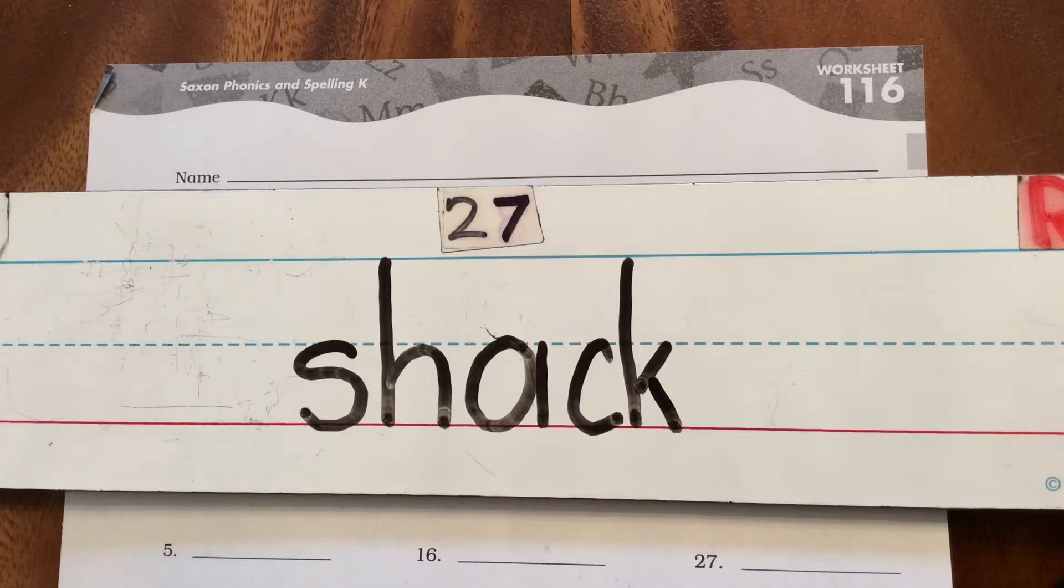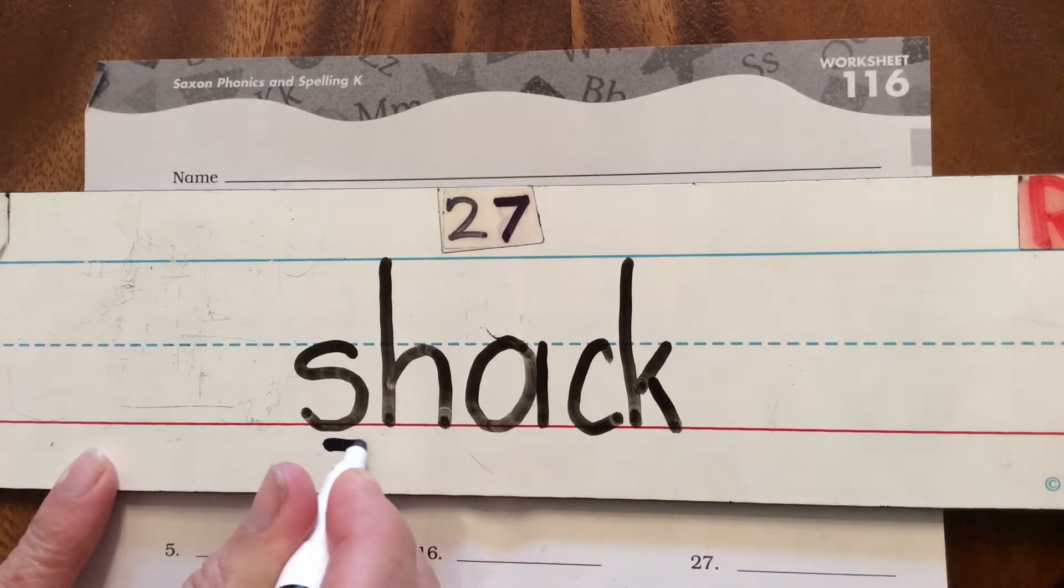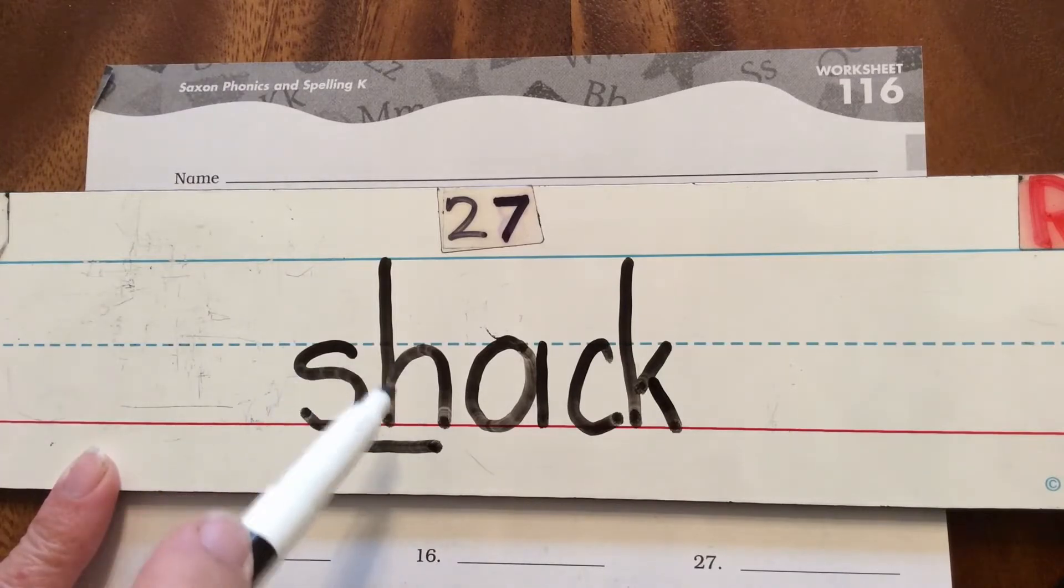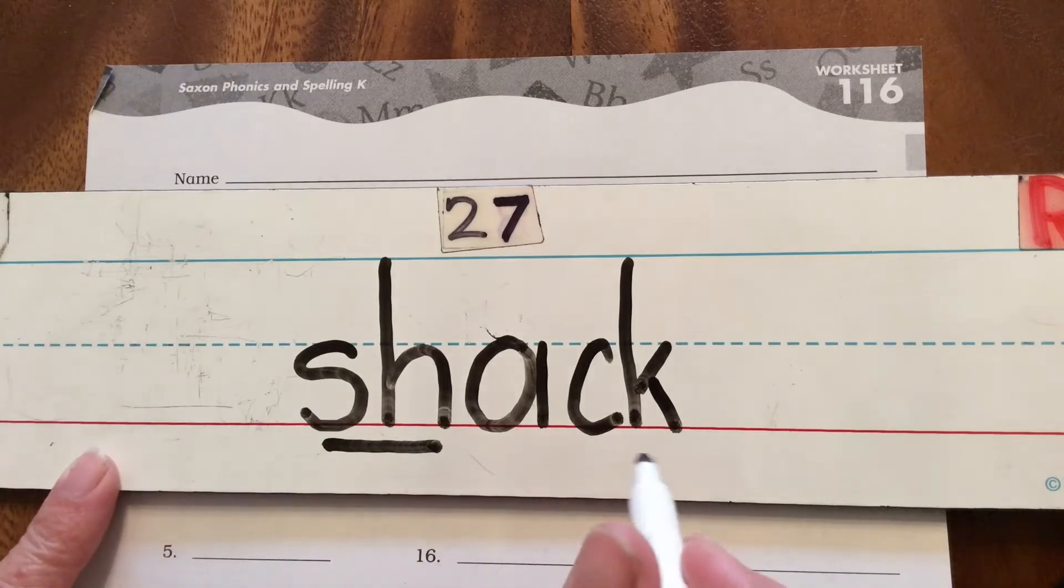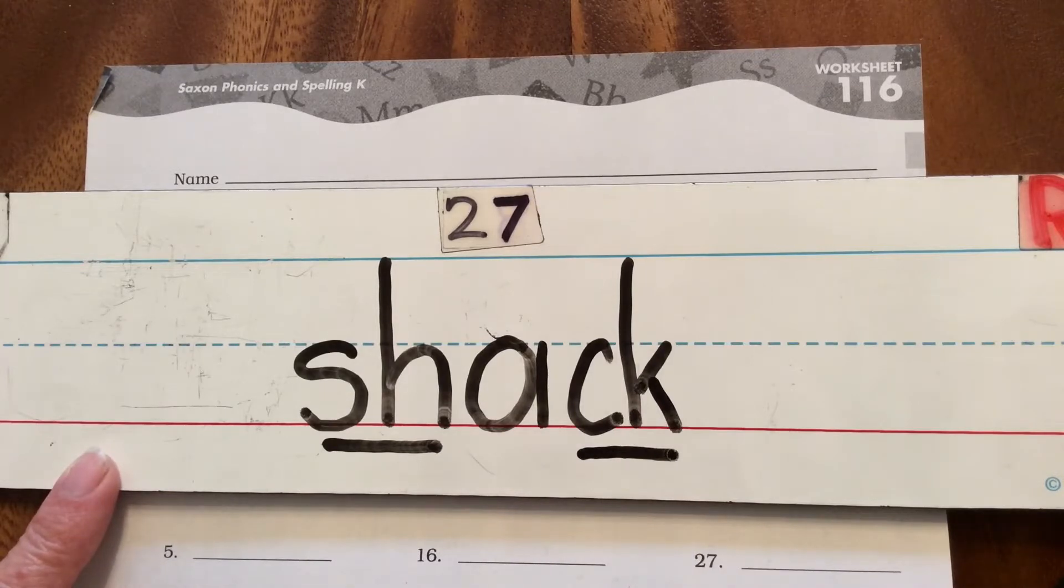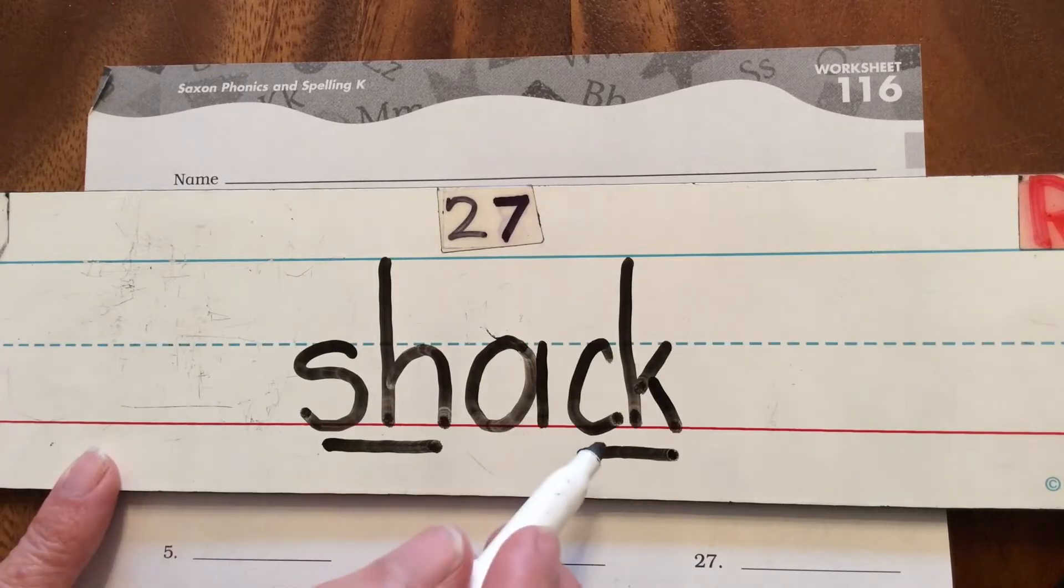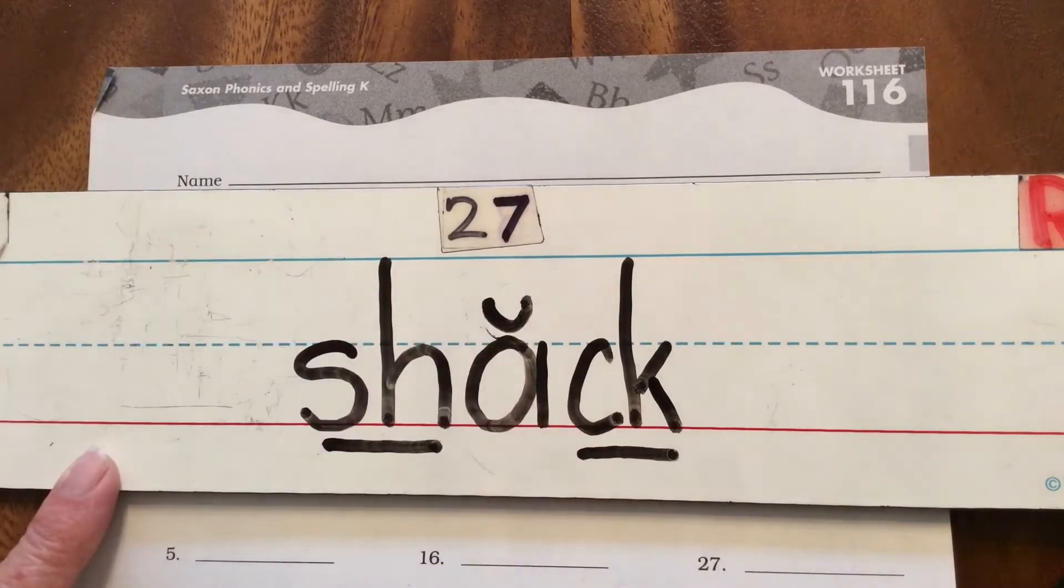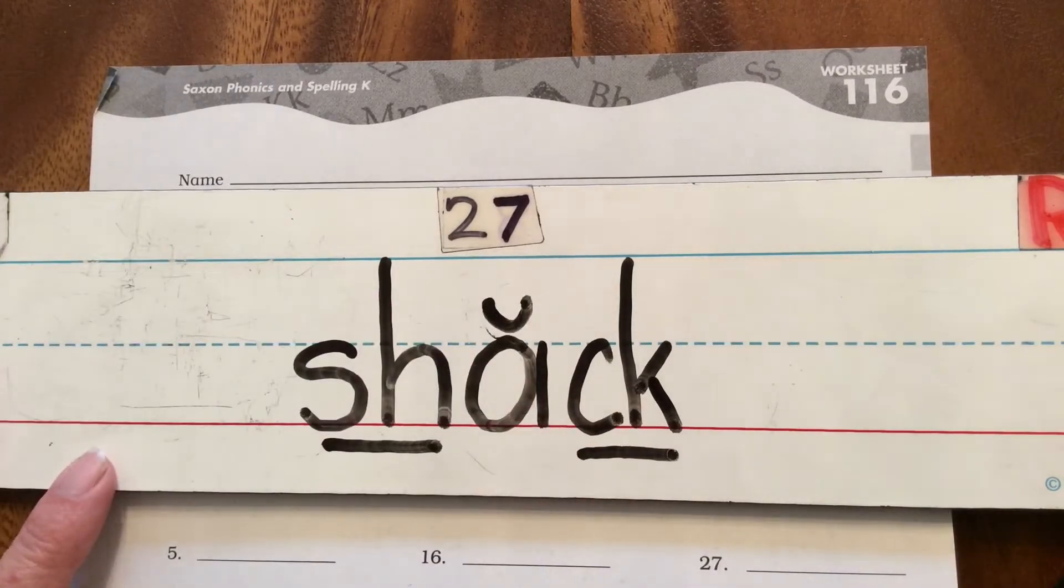This first word you can see our digraph sh that we worked with. With a digraph we make the long line underneath to show those two letters come together to make that one sound. I see another digraph in this word right here at the end, that's our k sound, two letters making that one sound. Since I have a ck at the end that means my vowel will be short because the ck is gonna follow a short vowel.